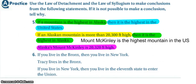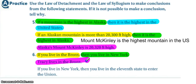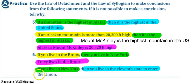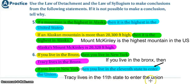Try the same for number six with color coding. If you live in the Bronx, then you live in New York — Tracy lives in the Bronx. We could say Tracy lives in New York, but there's another statement: if you live in New York, that's our statement B, then you live in the 11th state to enter the Union. Using the law of syllogism first: if you live in the Bronx, skip through New York and go straight to then you live in the 11th state to enter the Union. Final conclusion: Tracy lives in the 11th state to enter the Union.